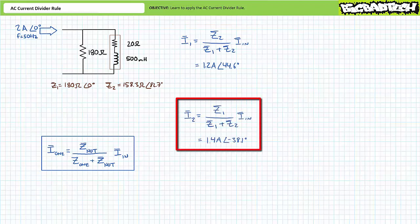Similarly, the AC current divider rule set up to solve for I2 suggests that I2 equals Z1 divided by Z1 plus Z2 times incoming current IN. Substituting in our given values yields I2 to be 1.4 amps at an angle of negative 38.1 degrees.